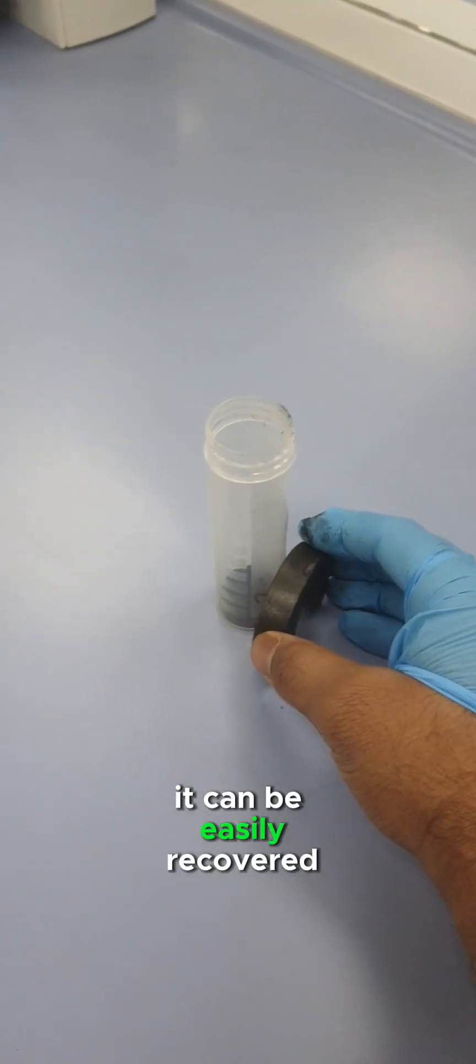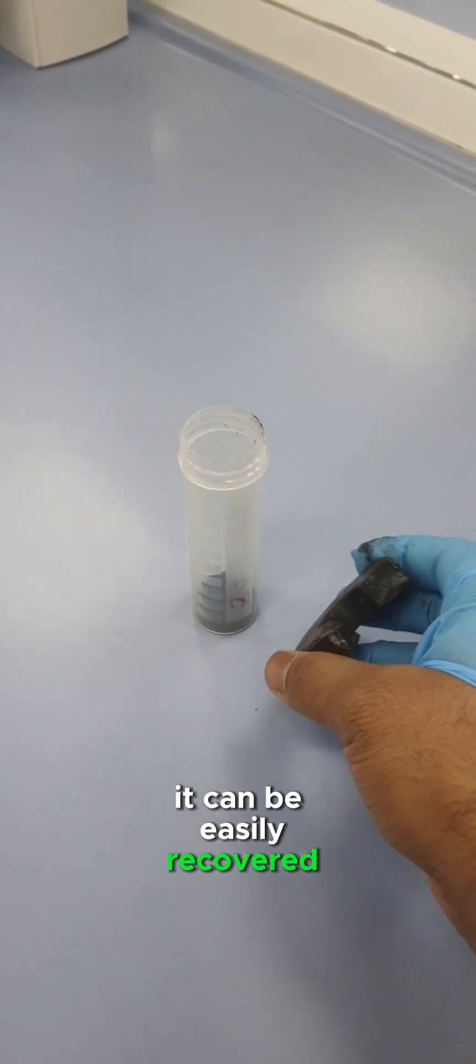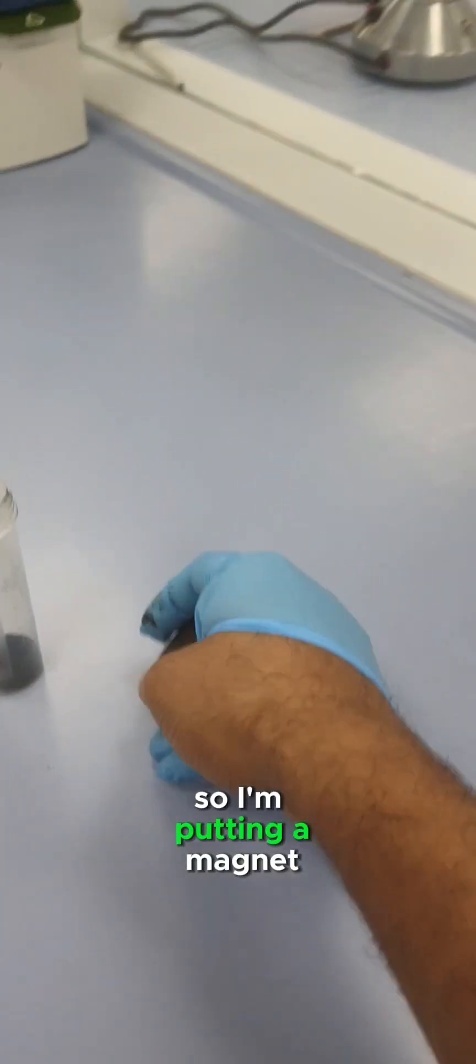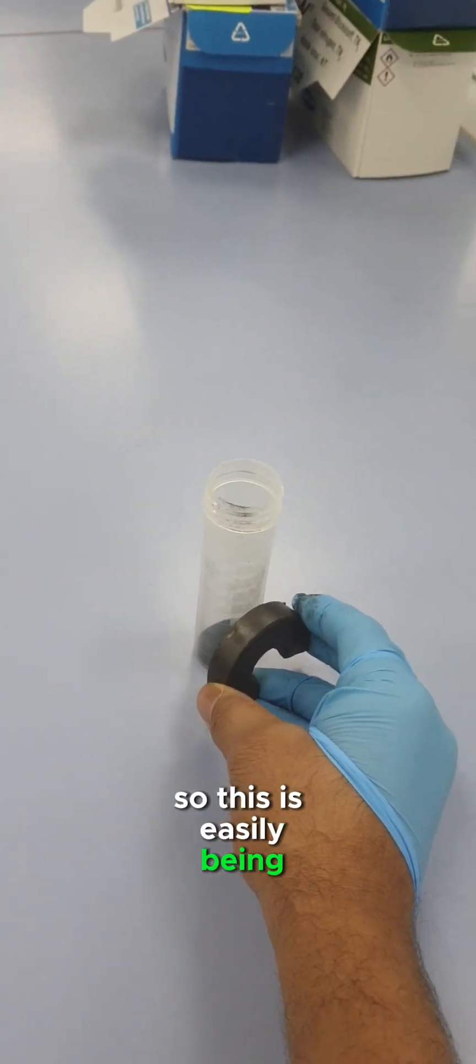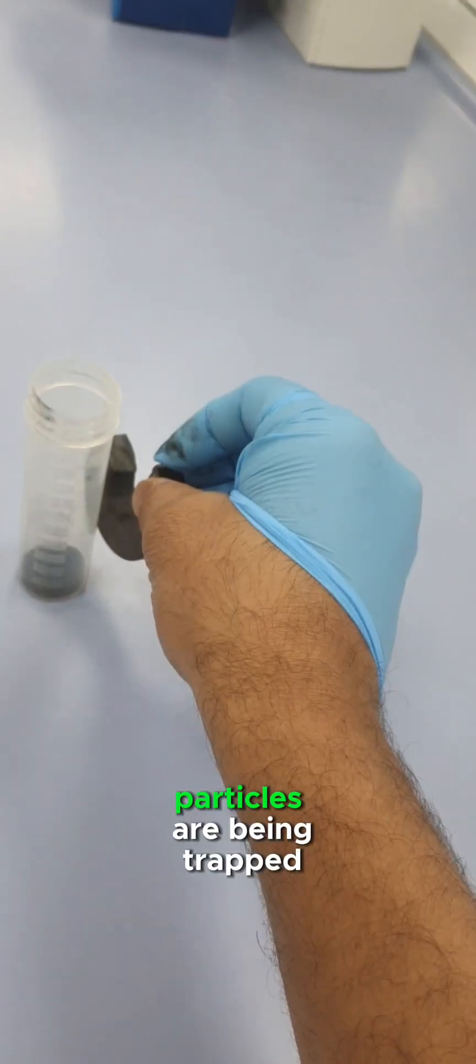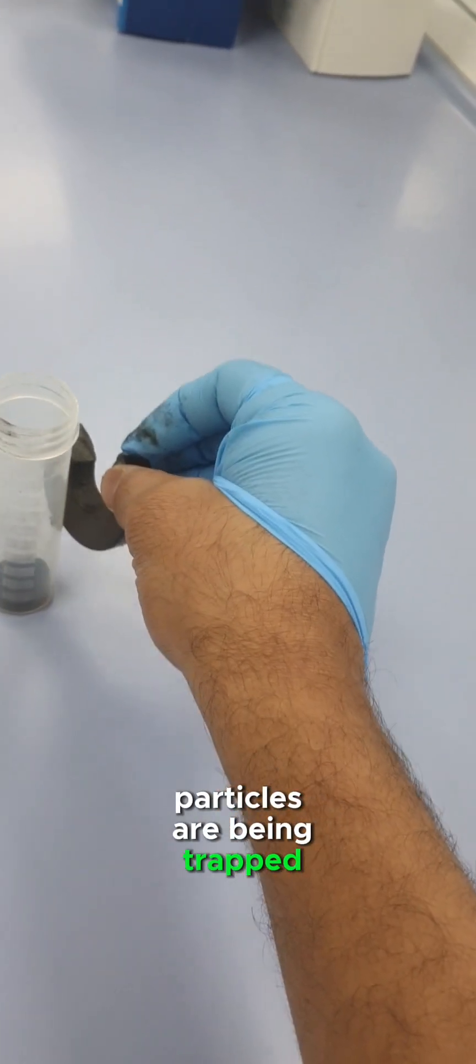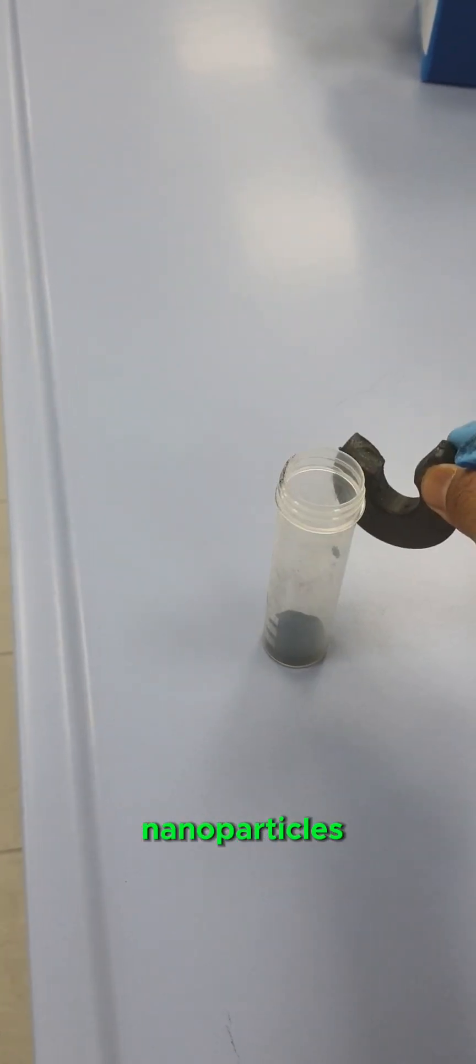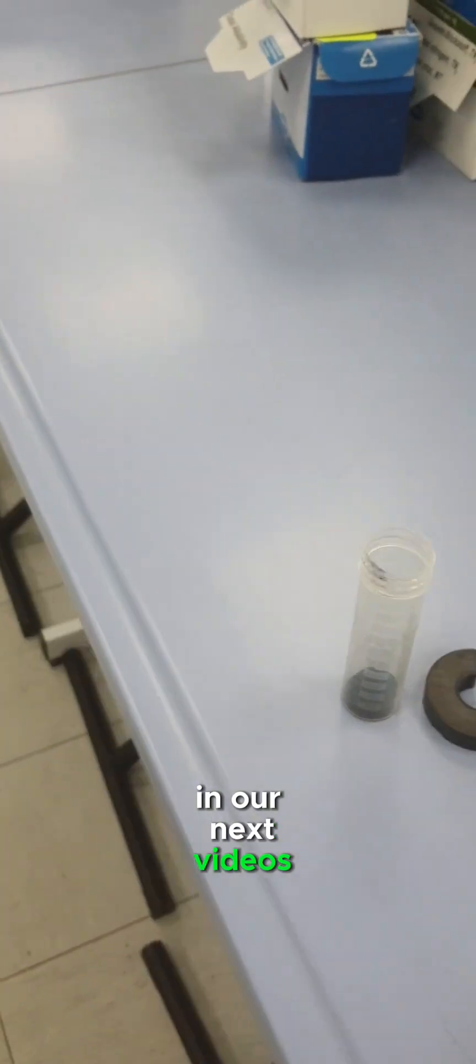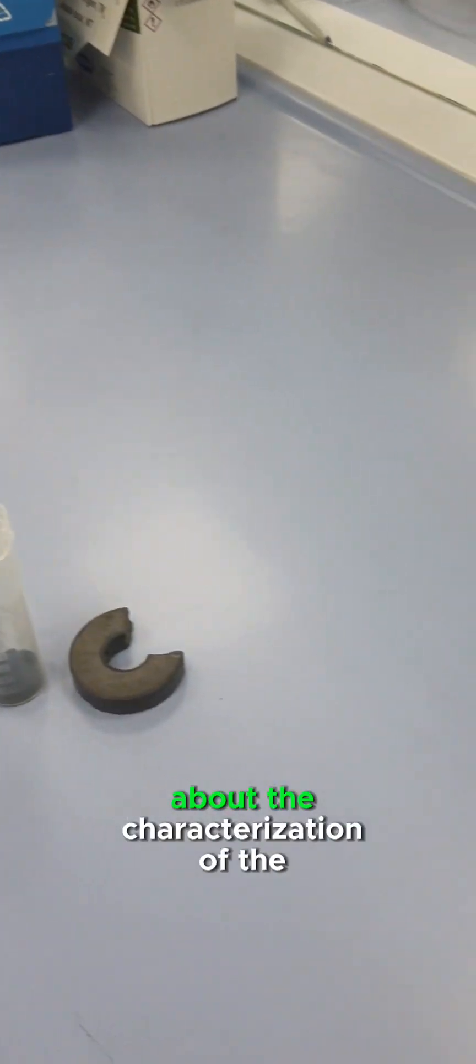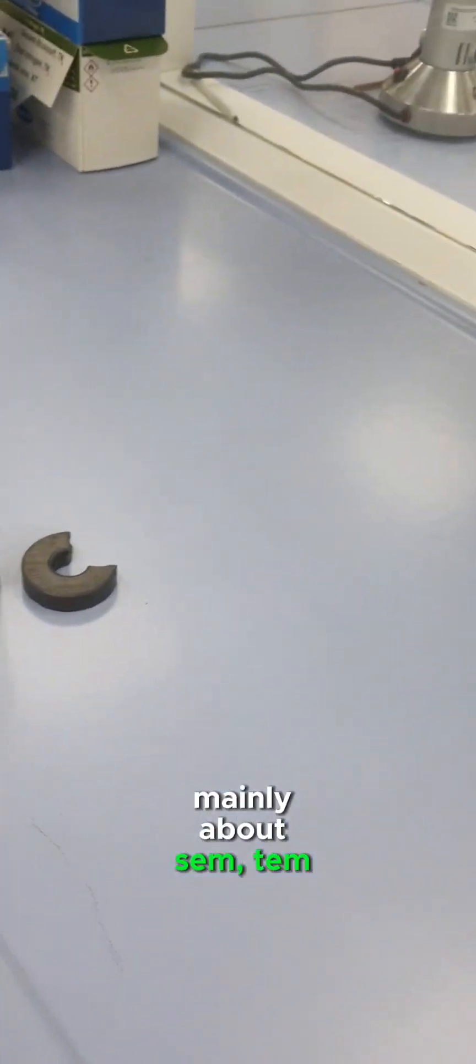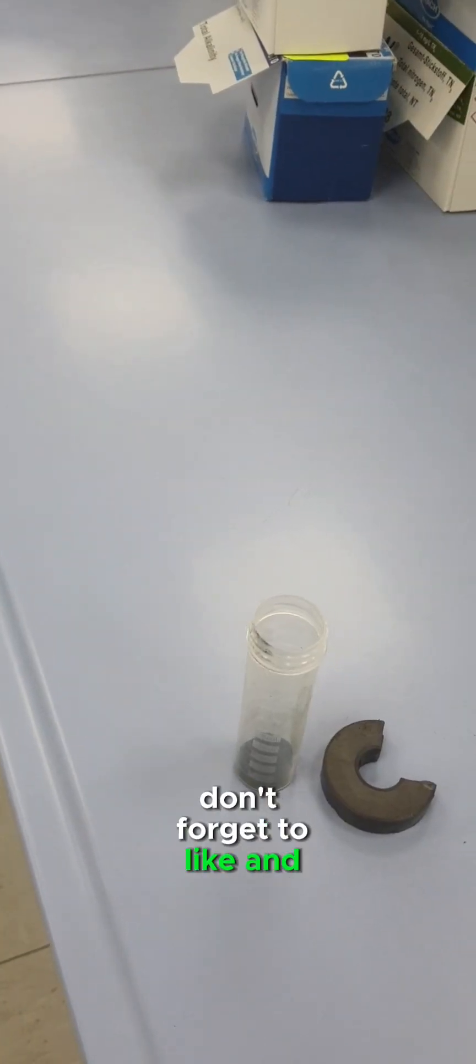It can be easily recovered or separated by the magnet. I'm putting a magnet here, so this is easily being attracted. You can see particles are being trapped—the magnetic particles. This is our finally prepared magnetic nanoparticles. In our next videos we'll be talking more about the characterization of the magnetic nanoparticles, mainly about XRD and BET. So don't forget to like and subscribe.